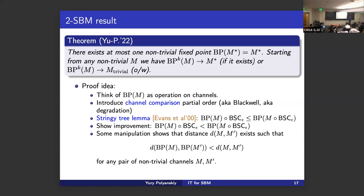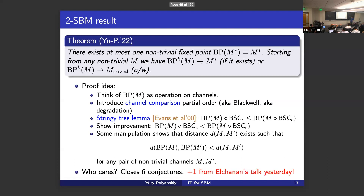After some massaging we can define a metric D(M, M') between channels — a crazy metric we can't easily compute, but it exists. The BP operator strictly decreases this metric, not multiplicatively but strictly. Then a theorem from the 1960s says that under this condition, there can only be one fixed point, and you also get convergence. This closes six conjectures from the literature, and Elkanan yesterday closed another conjecture about TC0 circuits using related ideas.